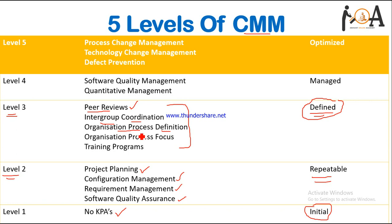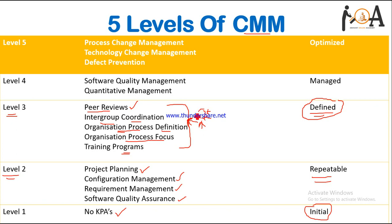Organization process definition is also part of level 3. A presentation is made and the organization discusses and analyzes the project, because the organization's reputation is attached to the project. Organization process focus and training programs are also included — training is provided to developers, testers, practical users, and customers. All these key process areas are covered under the Defined level.